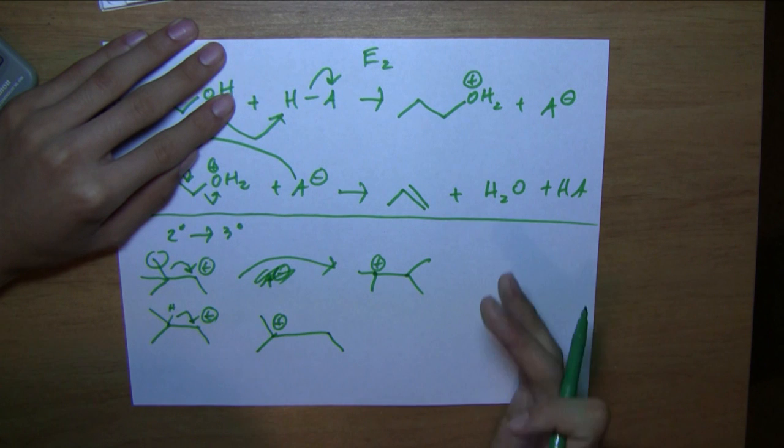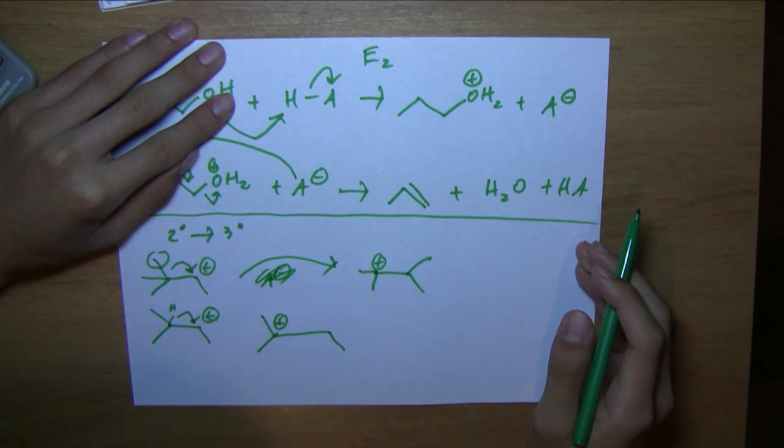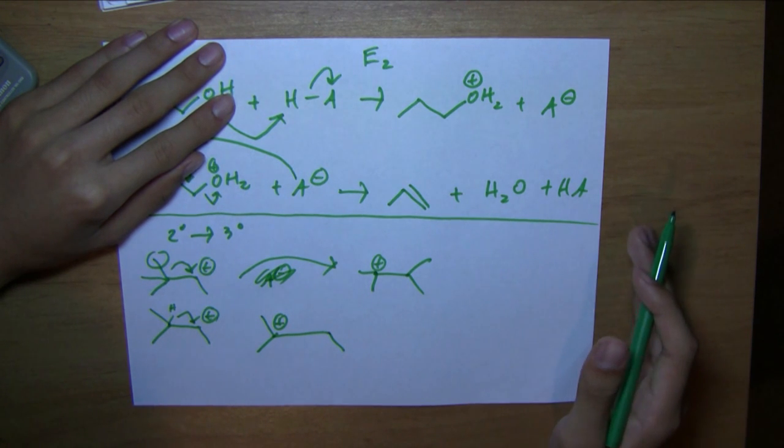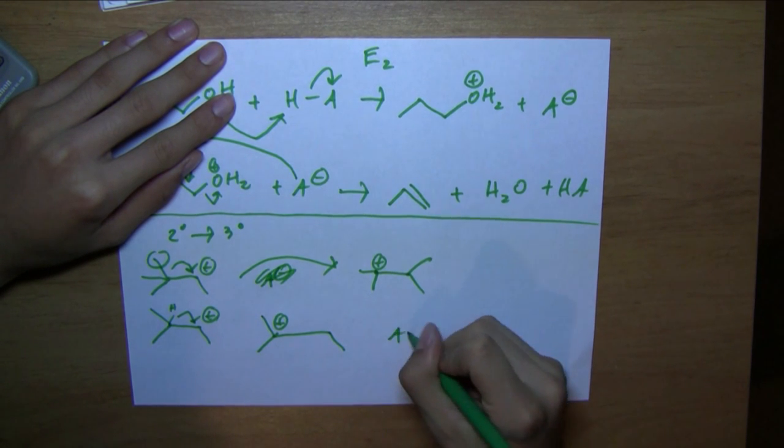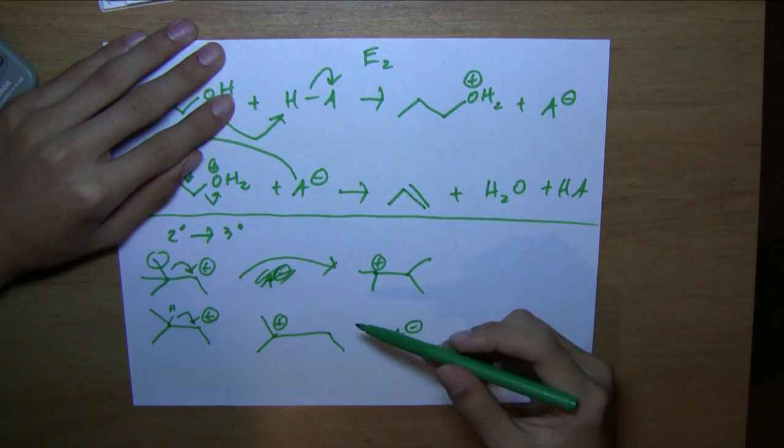So methide shift, hydride shift, any R-group shift basically can happen. Watch out for those. They will get you if you forget about it. And so then, the conjugate base would come back and rip off a beta hydrogen.